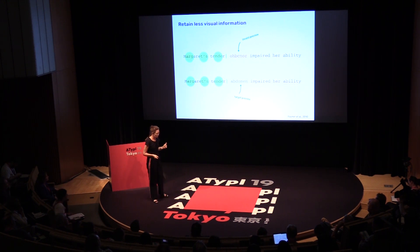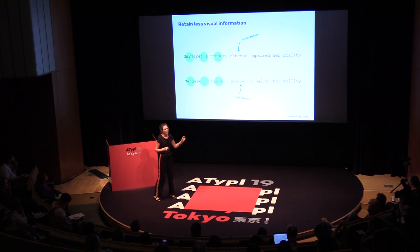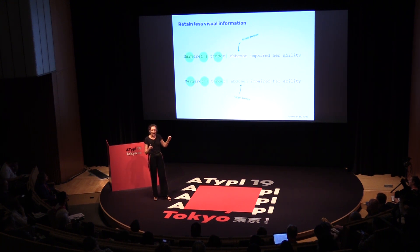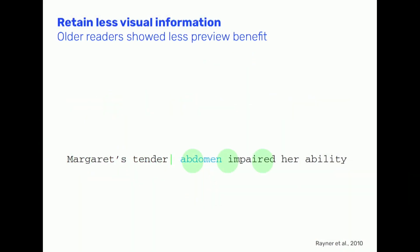This next experiment was carried out by Rayna and colleagues. In an eye-tracking study, they could control what was placed in the periphery — either the actual target preview or an invalid preview — and then as participants moved toward the target, they always changed it back to the actual word. What they found was that older people did not make use of this information. Whether it was nonsense or an actual word, there wasn't much difference for older people, while younger people made great use of peripheral information.